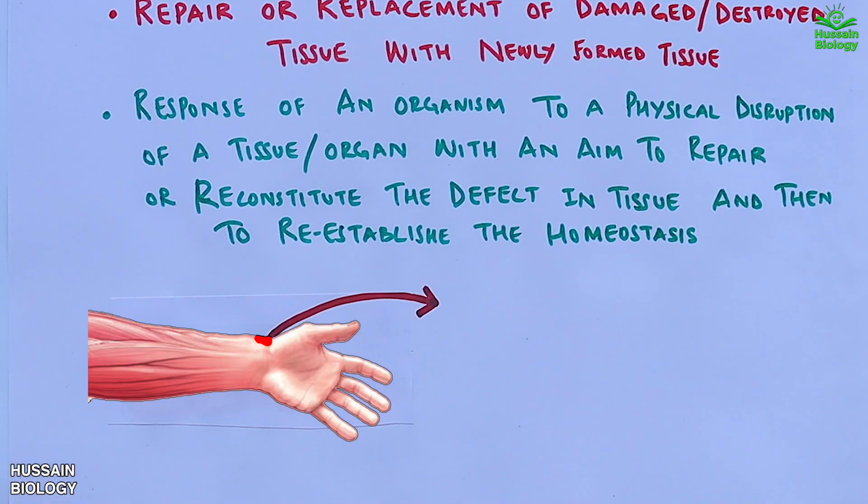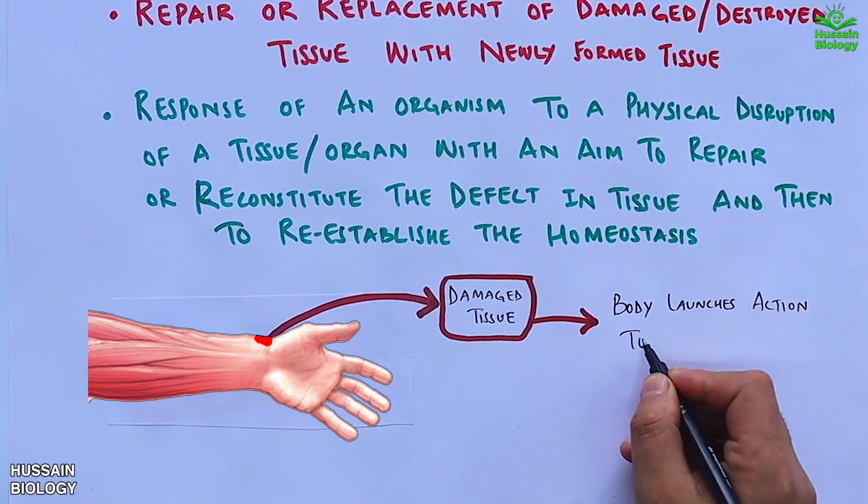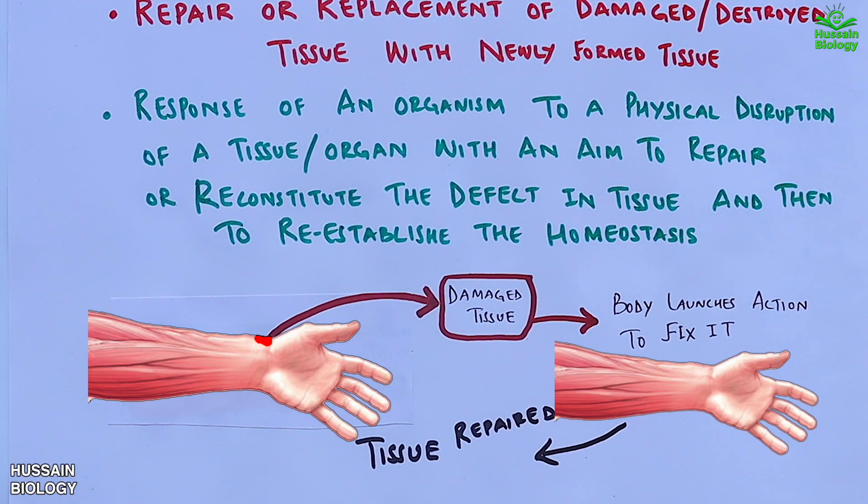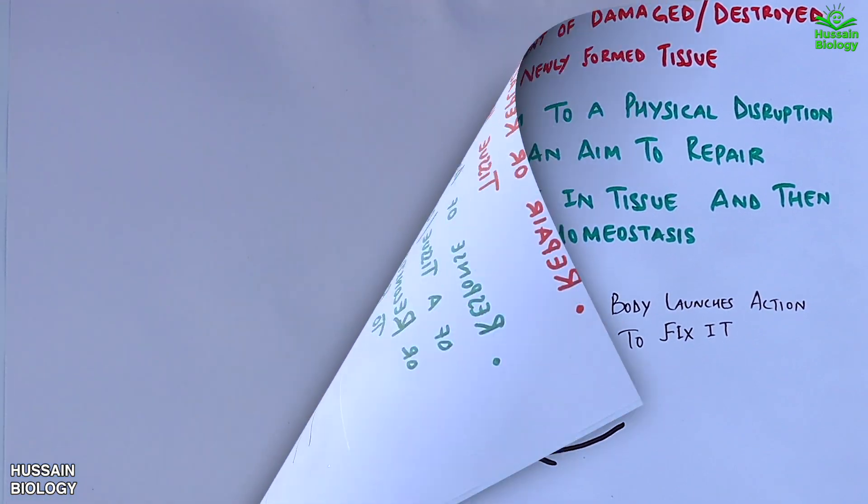In this diagram we can see where the tissue is damaged, then to this damaged tissue the body launches an action to fix it and we get the repair tissue. Now before getting to the process of wound healing, let's see what are the phases of wound healing.